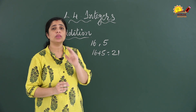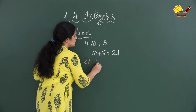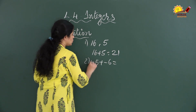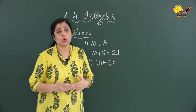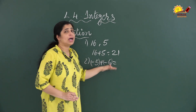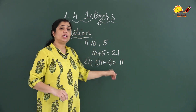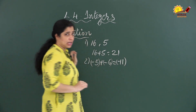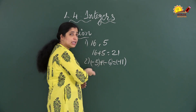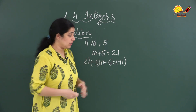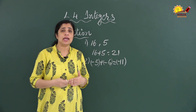The second condition is that both numbers are negative. Suppose minus 5 plus minus 6 — here the first number is also negative and the second number is also negative. In this situation you can add the numbers directly: add 5 and 6 to get 11, but you keep the negative sign. So the answer will be negative 11. Minus 5 plus minus 6 is equal to minus 11.